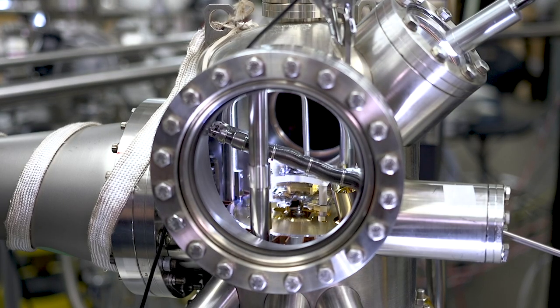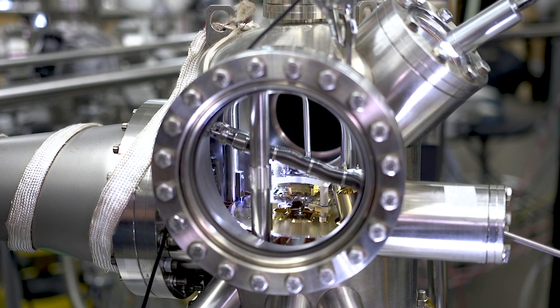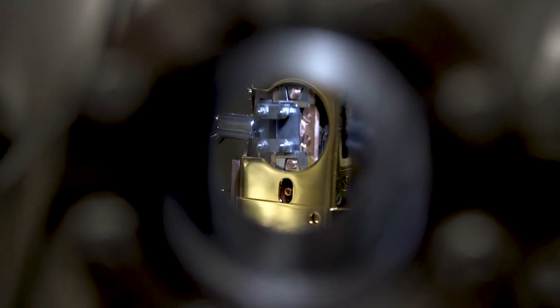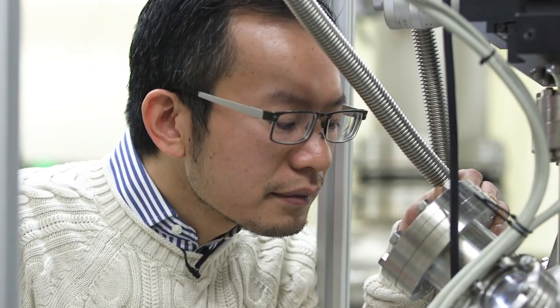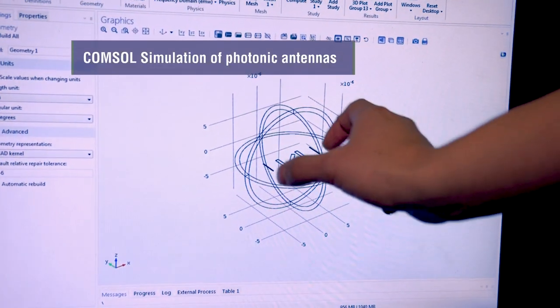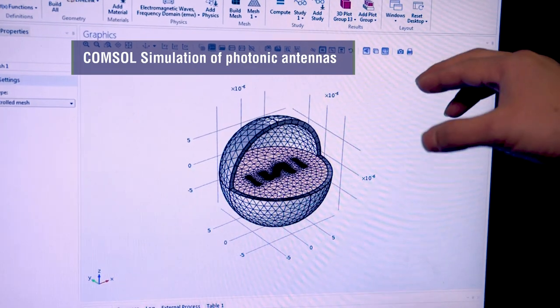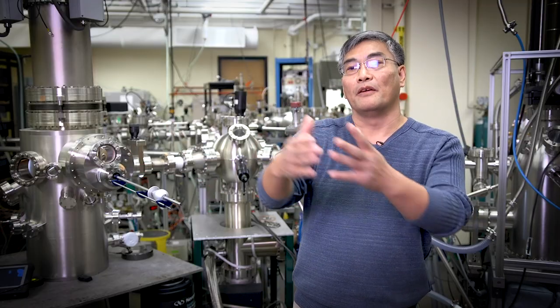In optics, that means the travel of light will be the same in both forward and backward directions. This property is important for many optical systems. For example, you want your antenna to be able to receive or emit information the same. In optical communications, you want the information to transform in both directions to be the same, to be symmetrical.